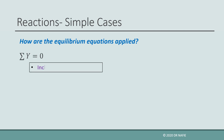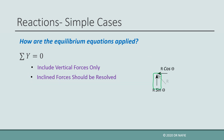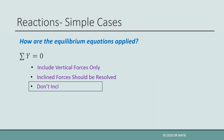For sigma y equals zero, we only include vertical forces and vertical components of inclined forces. The sign of the force is positive if it is pointing upward. We do not include any moments in this equation.